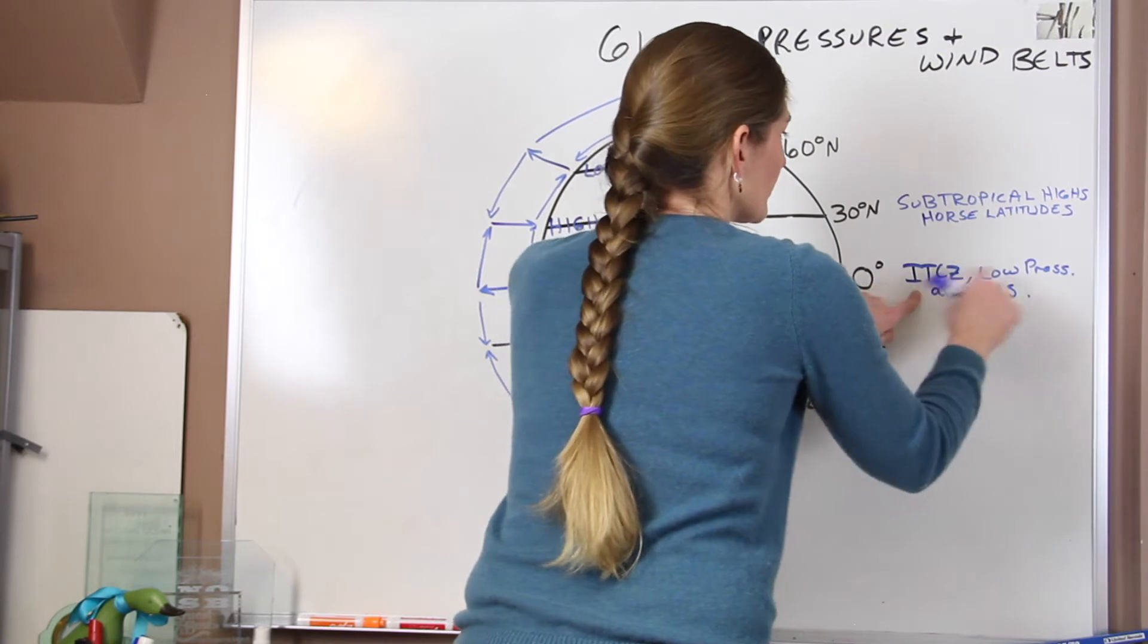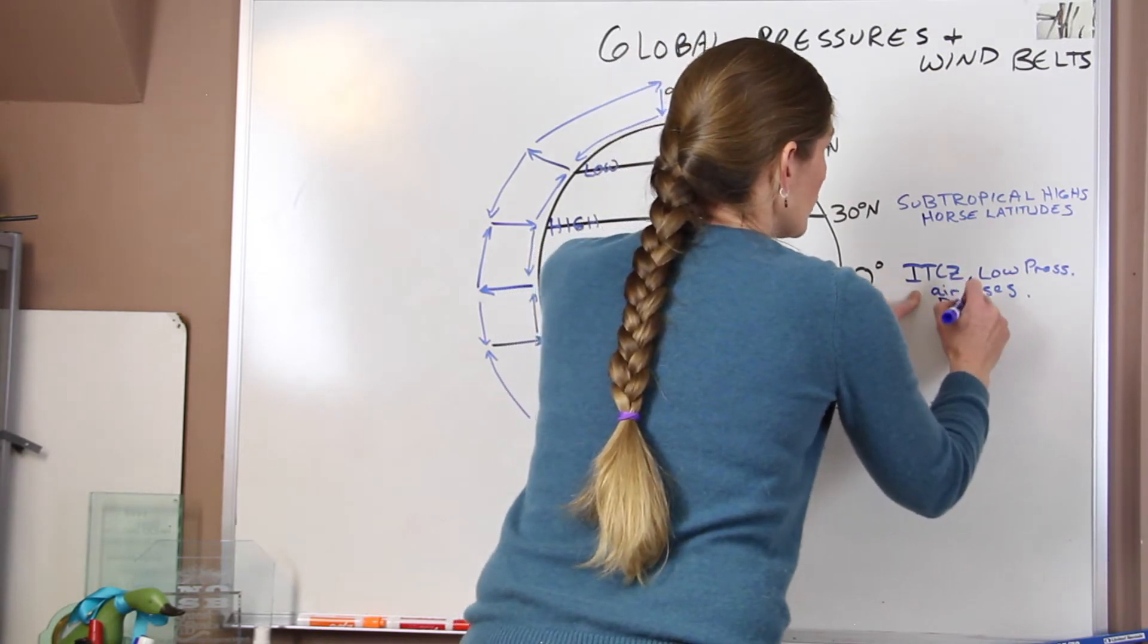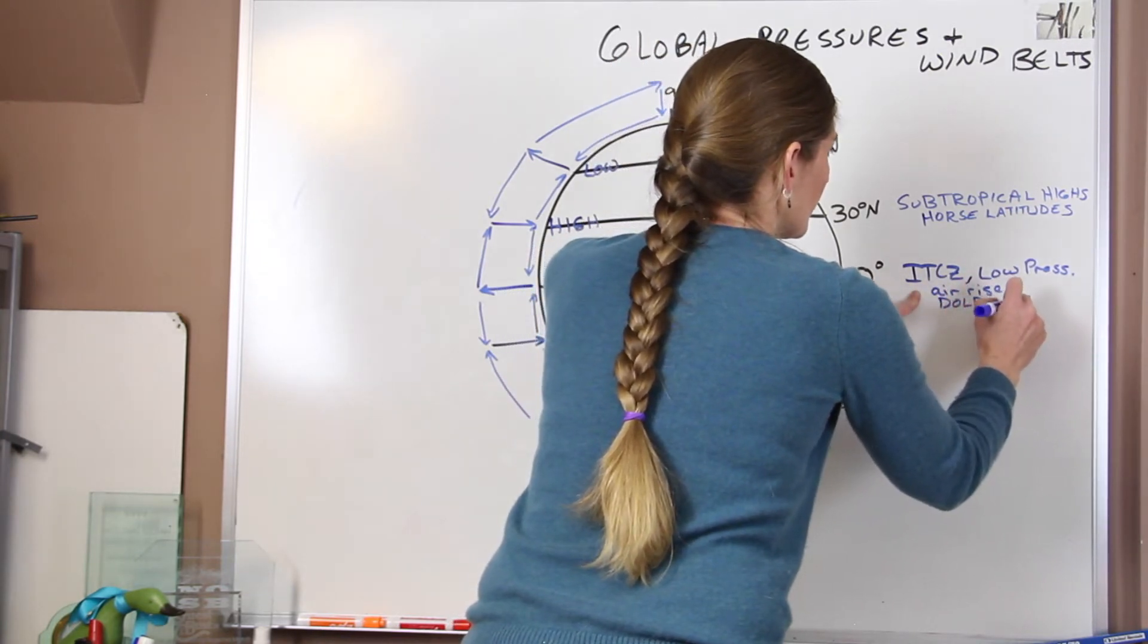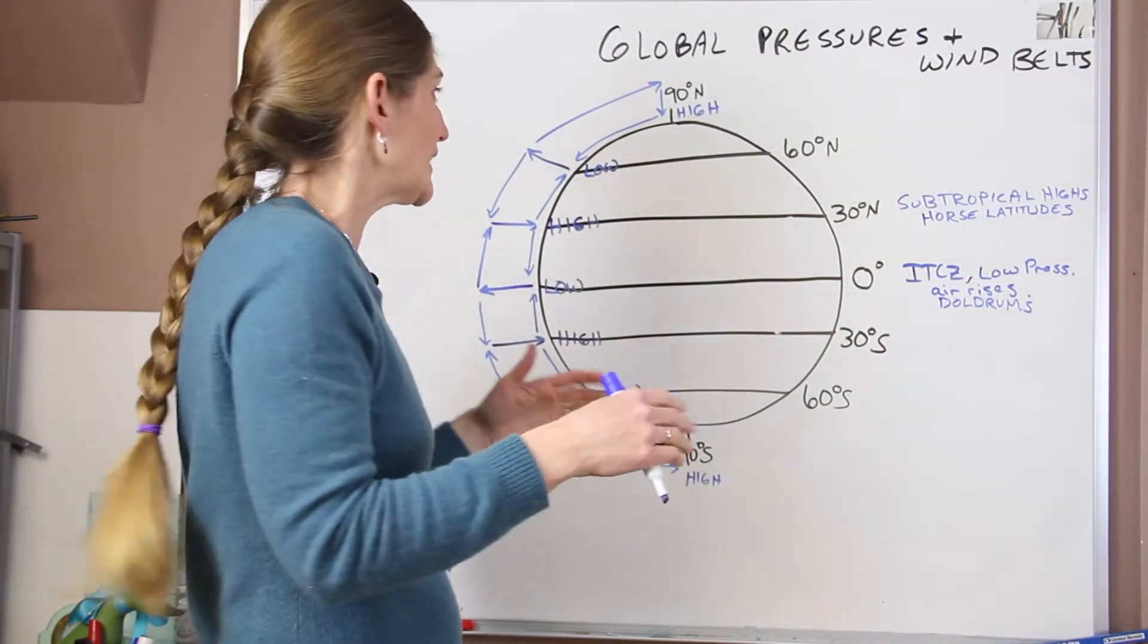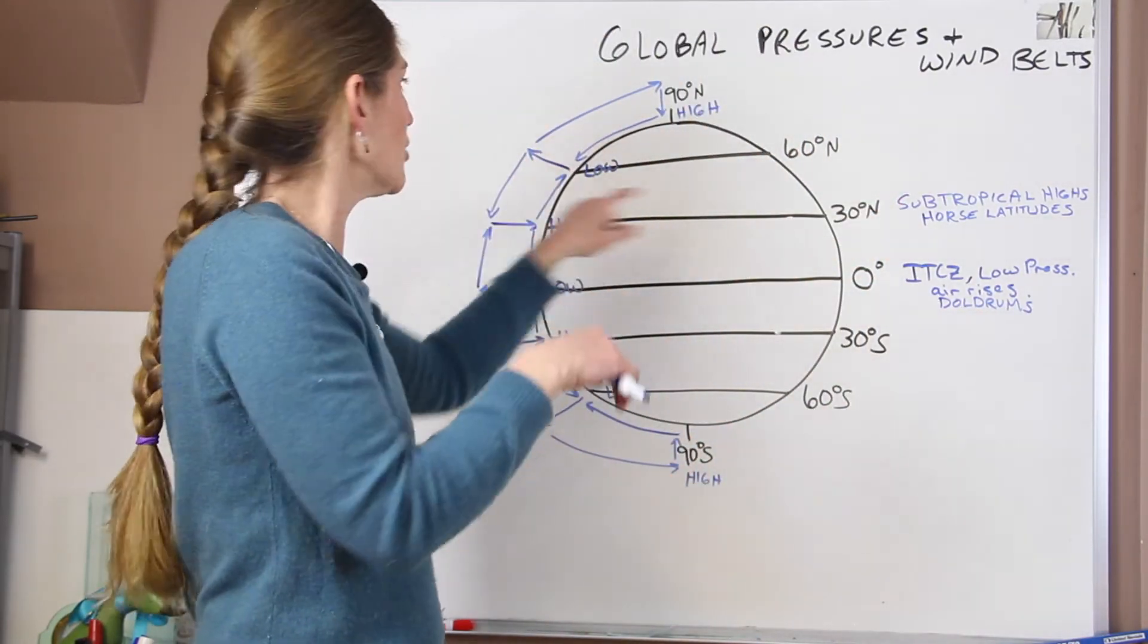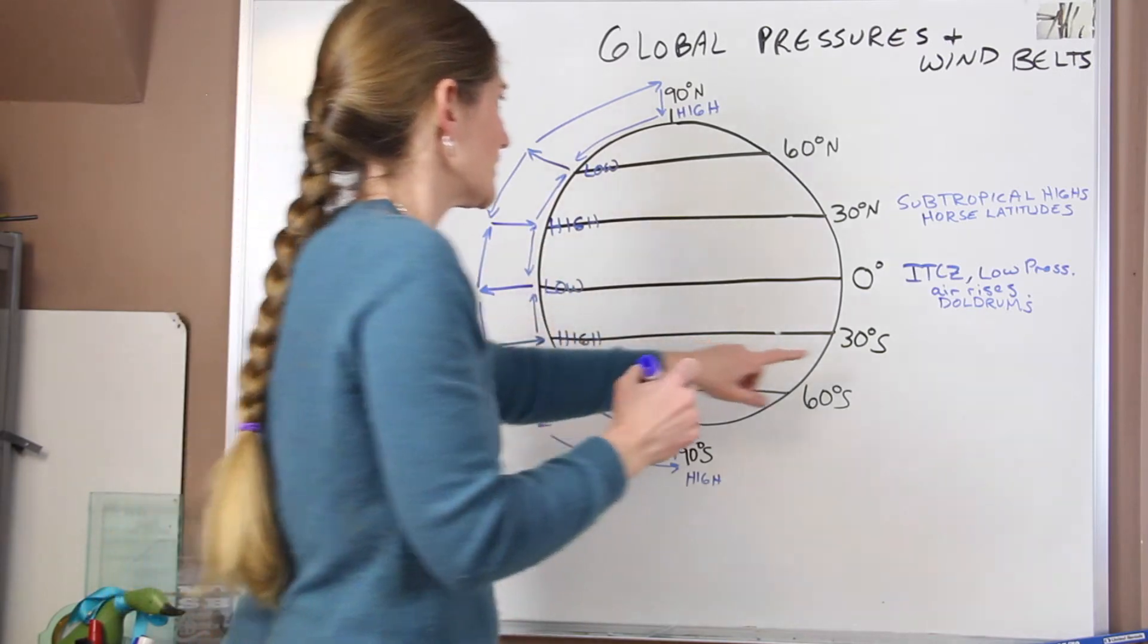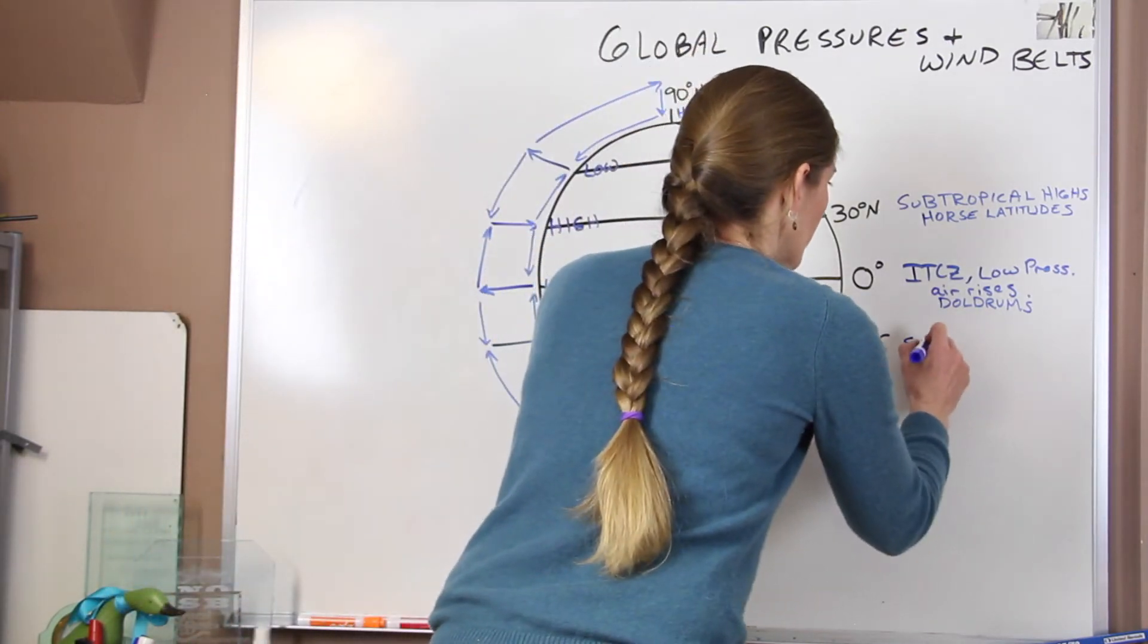And if you're trying to remember that the equator, they're also called the doldrums. These are two places where we don't see a lot of wind. And that's because of what's happening globally with these high pressure systems.